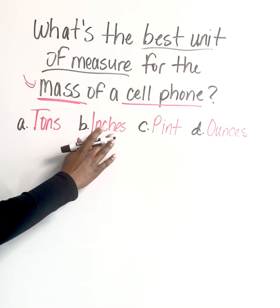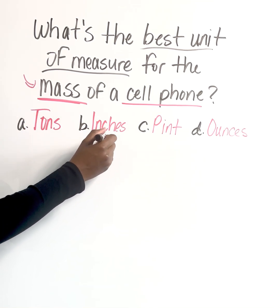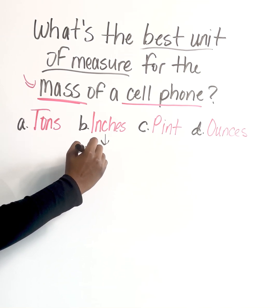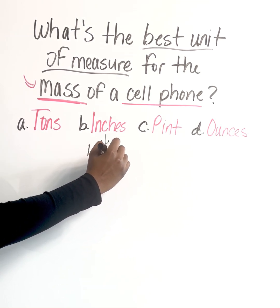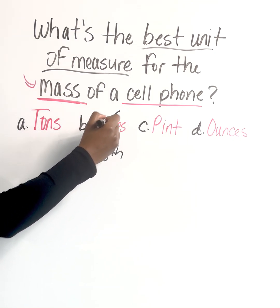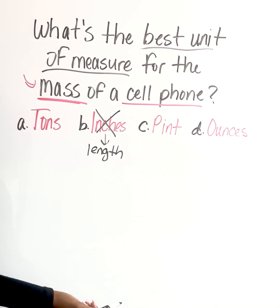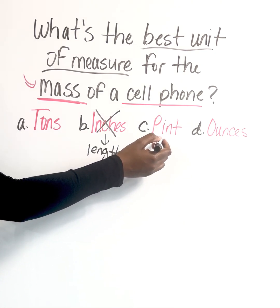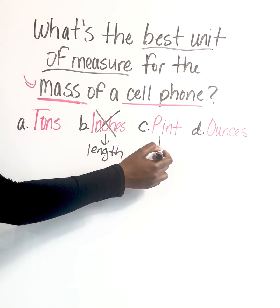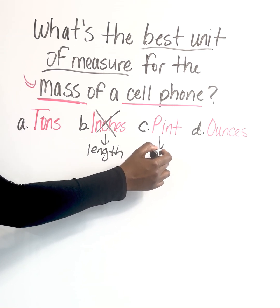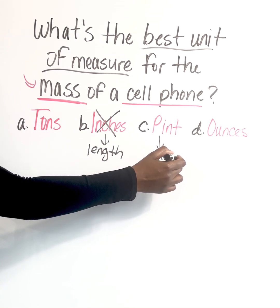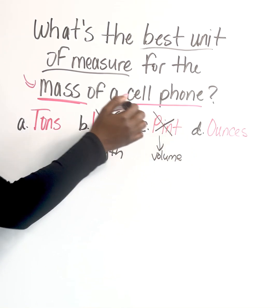Inches is going to represent length, and that's not what the question is asking us for. They're asking us for the mass. So I know I can eliminate that option. If I go here with pints, pints falls more in line with volume. So I can eliminate that because we're looking for mass.